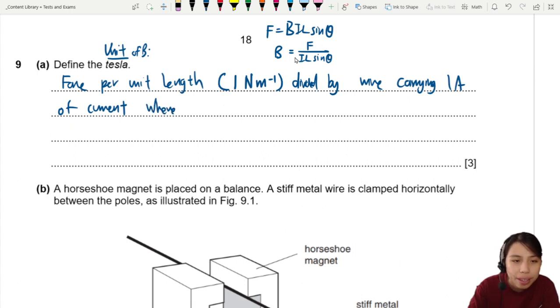Where, next we must talk about the angle. Where the current, or the wire, is perpendicular. Or 90 degrees to the magnetic field.